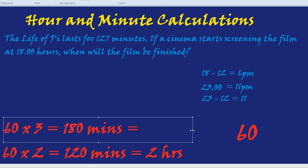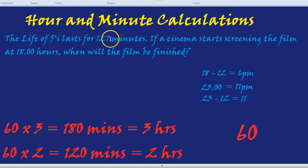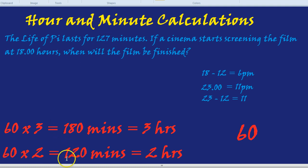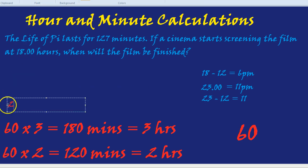All of these are worth memorising. What's the closest number of hours to this film? The film is 127 minutes. The nearest is 2 hours, which is 120 minutes — and 127 is 7 minutes more than 120. So the film lasts for 2 hours and 7 minutes.